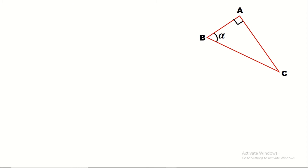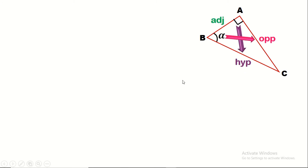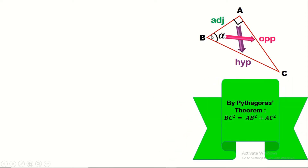Now we're going to learn a very important rule in trigonometric functions. We should keep in mind that in right triangles, we don't only have trigonometric functions — we can also apply the Pythagorean theorem. By Pythagoras theorem, the hypotenuse squared equals the sum of the squares of the other two sides, so BC squared equals AB squared plus AC squared.